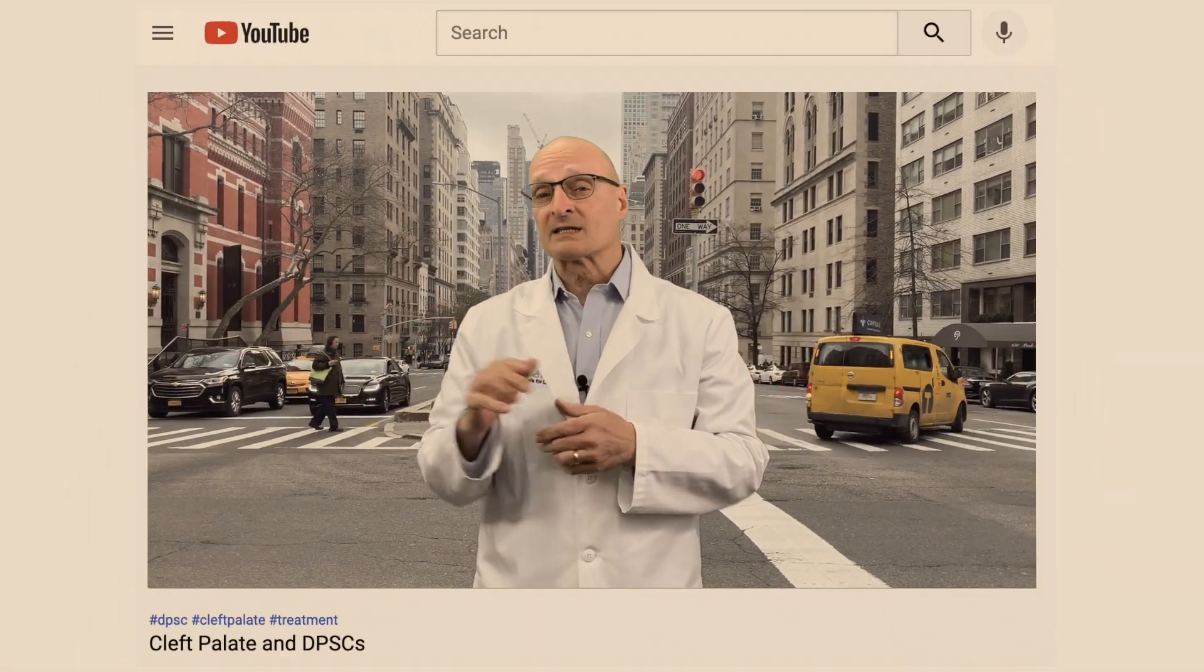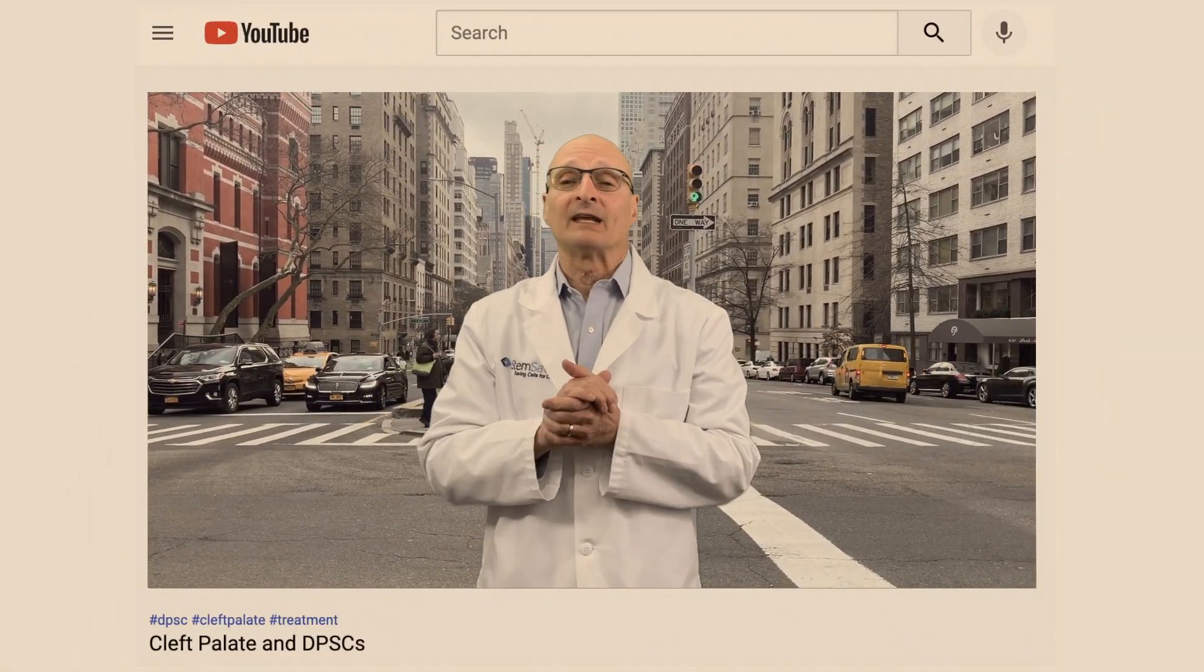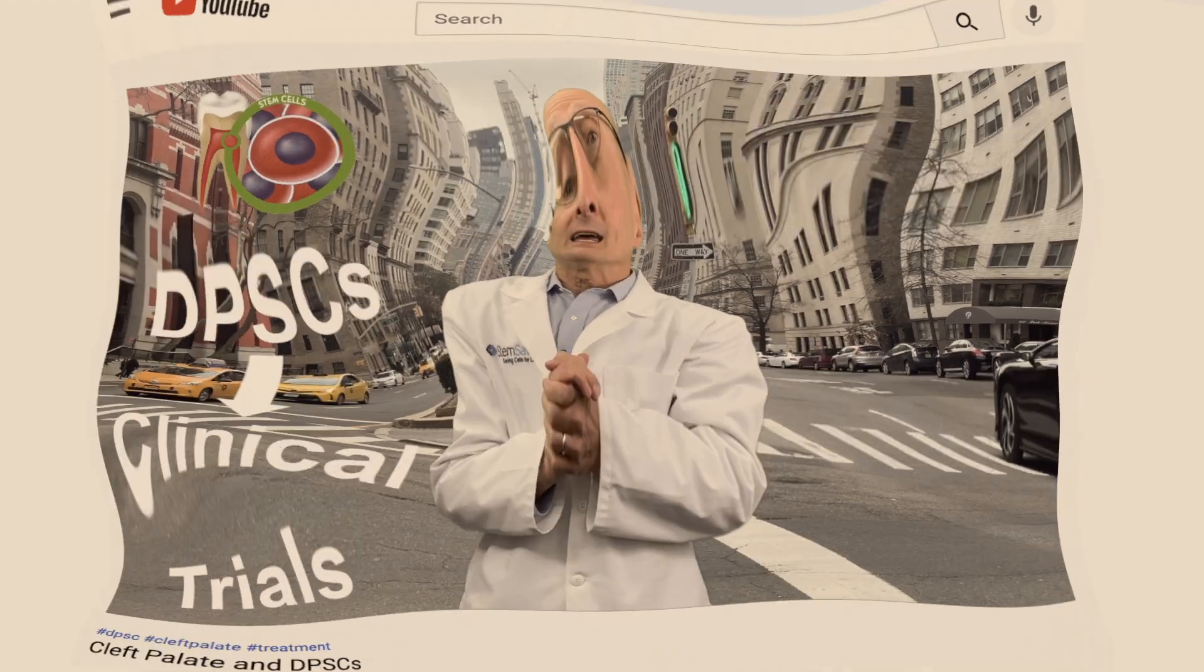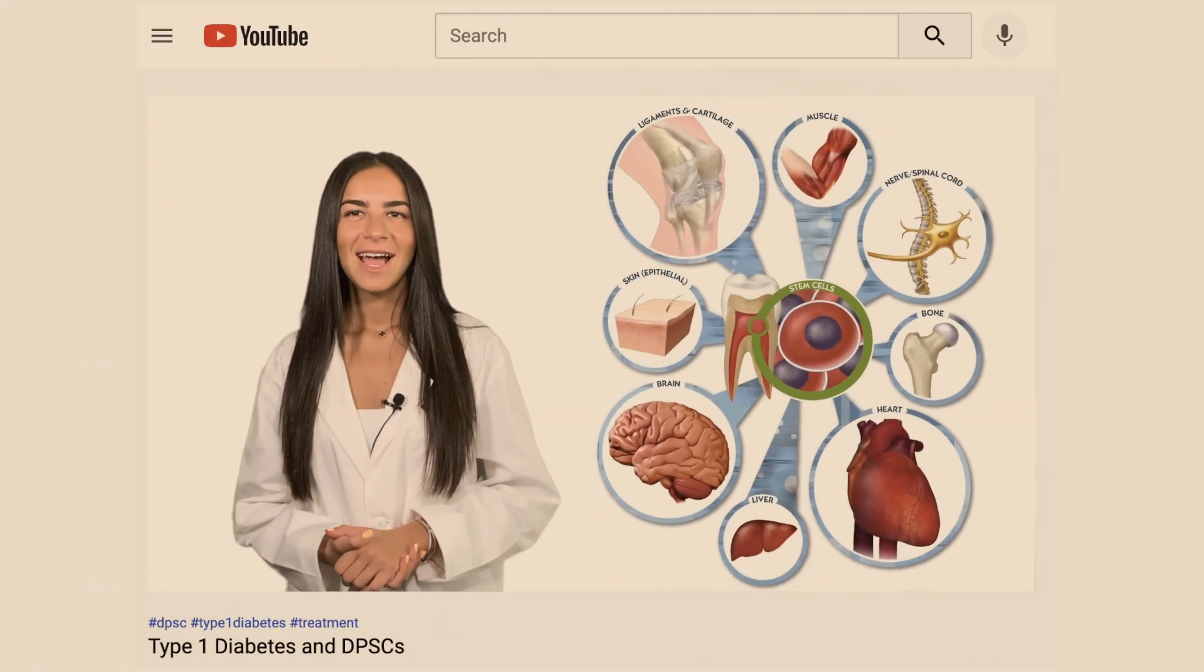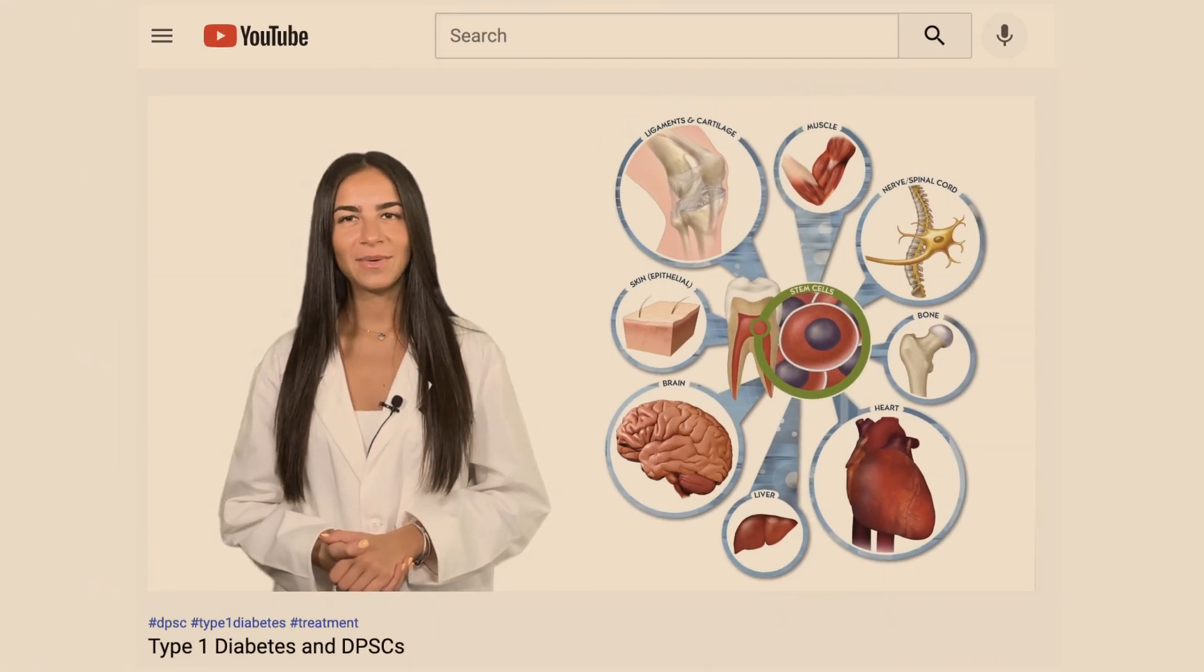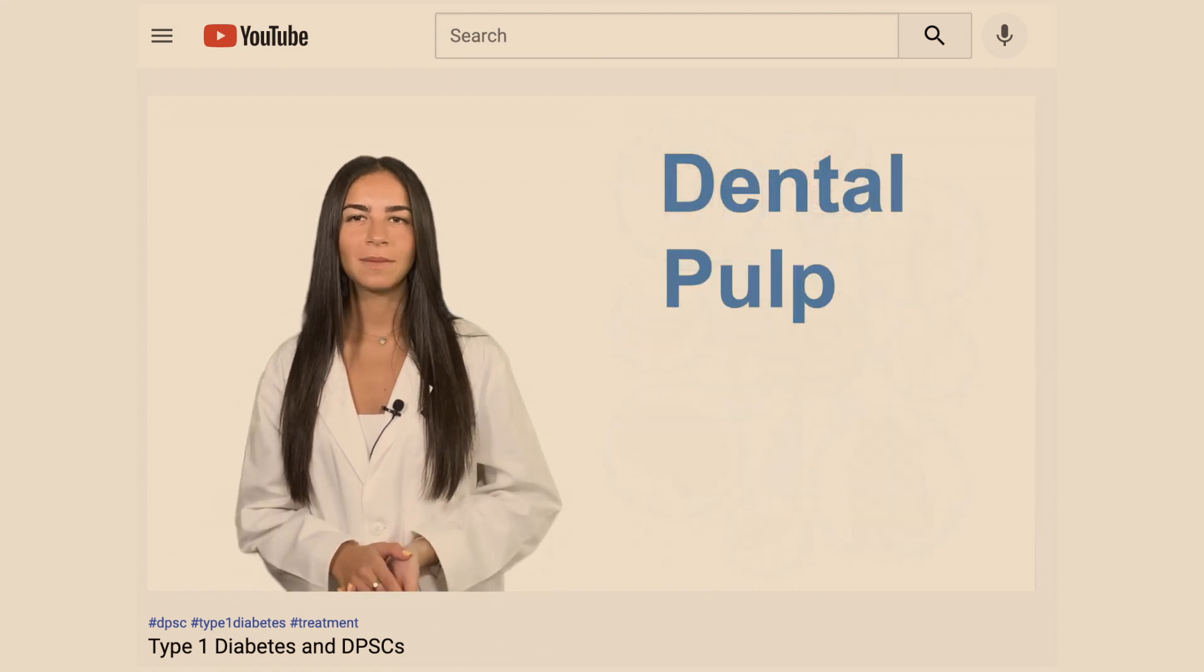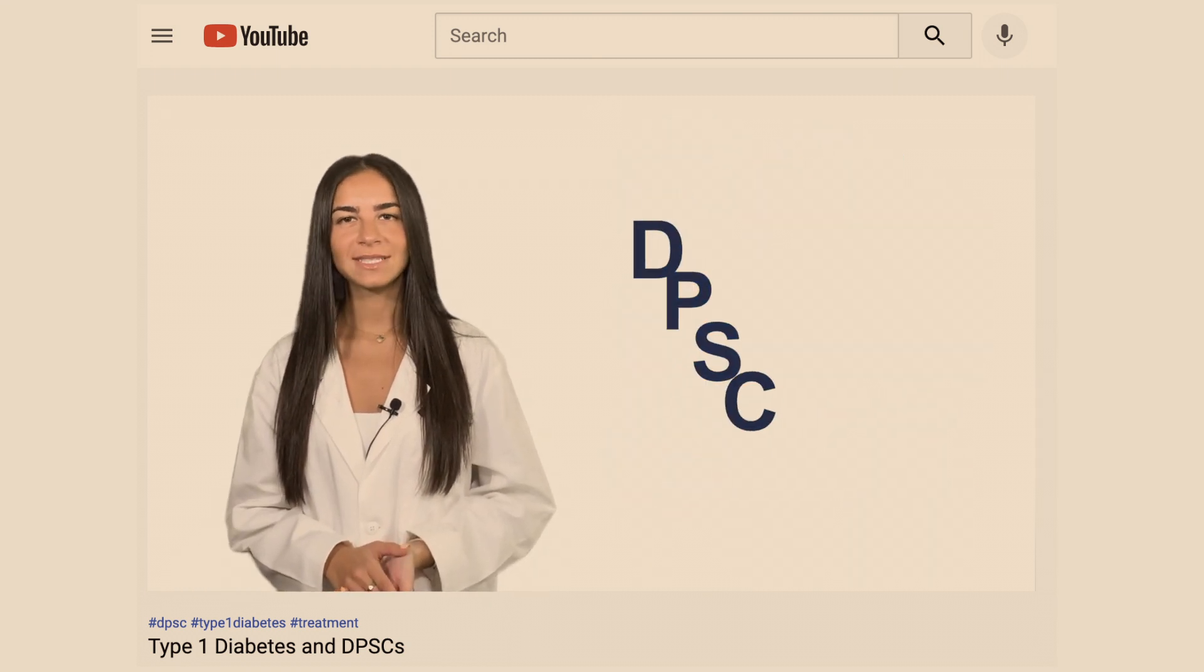As our regular viewers know, a couple of blogs ago, I reported on a trifecta. That's three clinical trials utilizing dental pulp stem cells, commonly referred to as DPSCs. Little did I know at the time that on our next vlog, I would be upstaged by Regina, as she reported on a Grand Slam, a fourth clinical trial utilizing DPSCs.